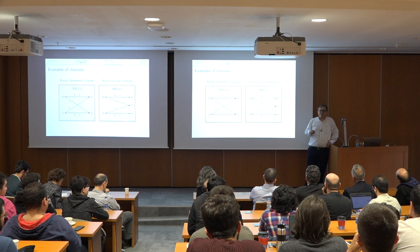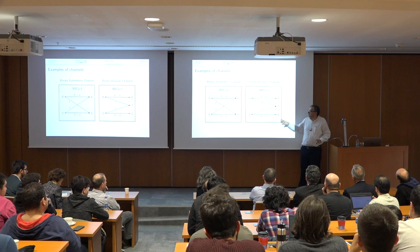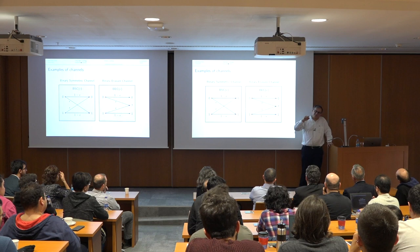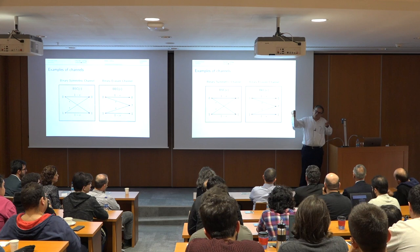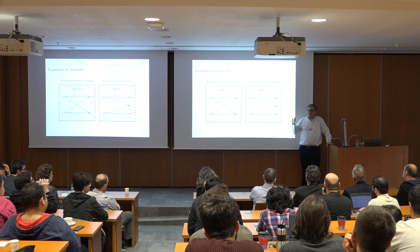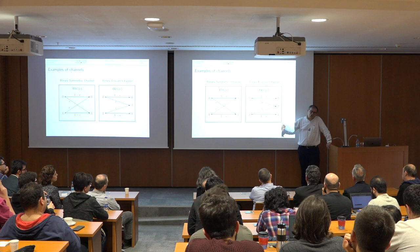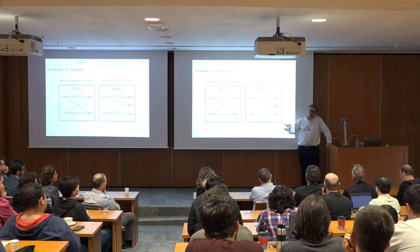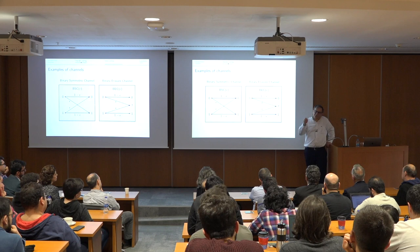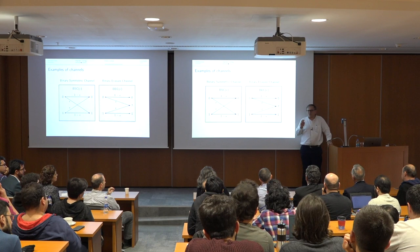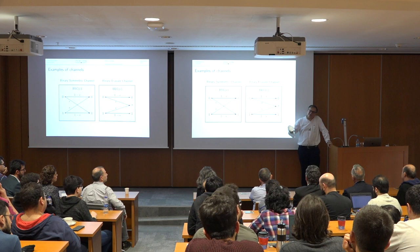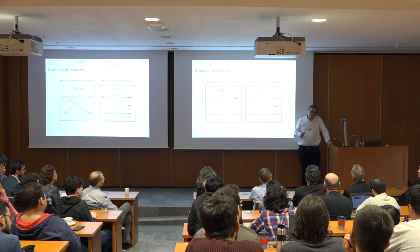When I say there were no error-correcting codes proved to achieve capacity, I mean there were no explicit constructions. The way Shannon proved his theorem was by random coding: you have 2^K messages and map them into randomly chosen code words in the N-dimensional space. He showed the probability of error goes to zero on average over all such random choices — showing the existence of good error-correcting codes without exhibiting any particular code. This is one of the fascinating aspects of Shannon's theorem: it's an existence proof without showing any concrete algorithm.